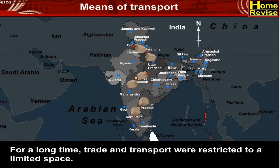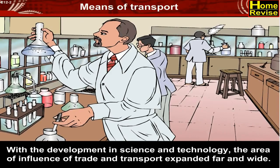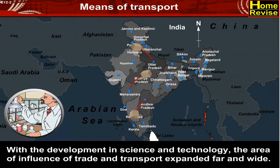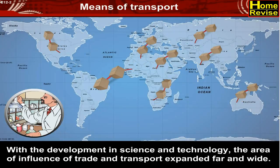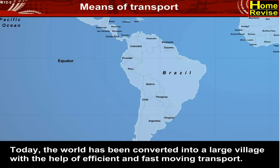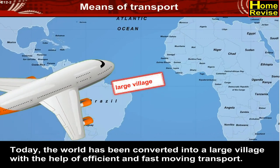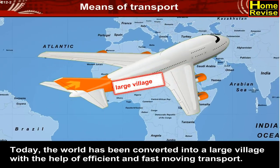For a long time, trade and transport were restricted to a limited space. With the development in science and technology, the area of influence of trade and transport expanded far and wide. Today, the world has been converted into a large village with the help of efficient and fast-moving transport.